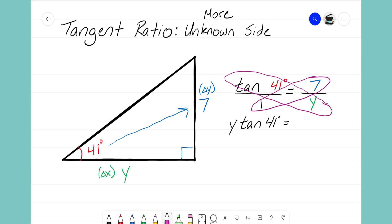Now again, my goal here is to get Y by itself. Well, right now Y is multiplying tangent of 41 degrees, so I will just have to take both sides of this equation and divide it by tangent of 41 degrees. I do that because these tangent of 41 degrees will reduce to a 1, they cancel, and so I'm left with over here that Y just equals 7 divided by tangent of 41 degrees.